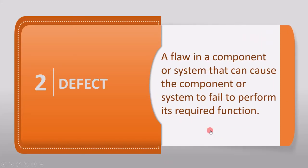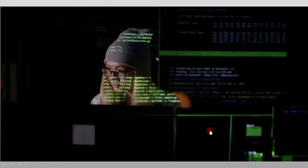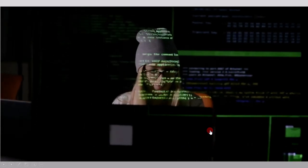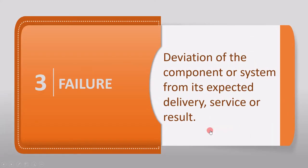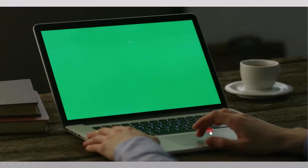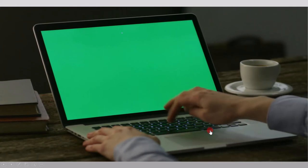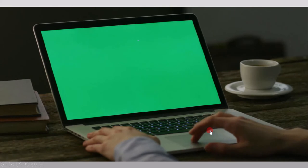The second term is defect, which is also referred to as fault or bug. The defect is defined as a flaw in a component or system that can cause the component or system to fail performing its required function. In software testing, once the tester finds the bug and the developer accepts it, then it is called a fault. The third term is failure. It is defined as a deviation of the component or system from its expected delivery, service, or result. For example, if you are using the software but it hangs — if the product is in use and it's not working as expected — then it is a failure.